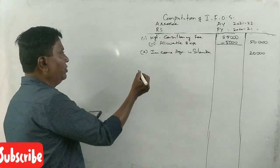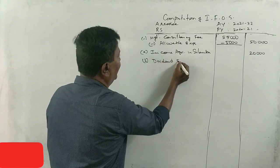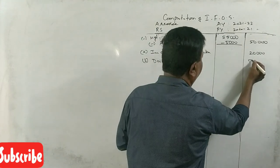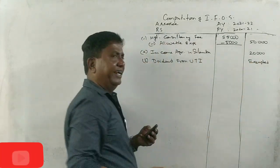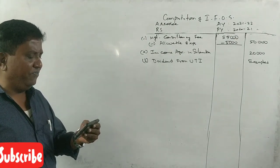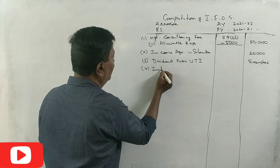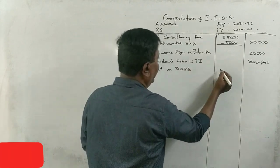Dividend from UTI, dividend from Unique Trust of India, exempted. Interest on Post Office savings bank account, 1,000, exempted. Up to 3,500, exempted.